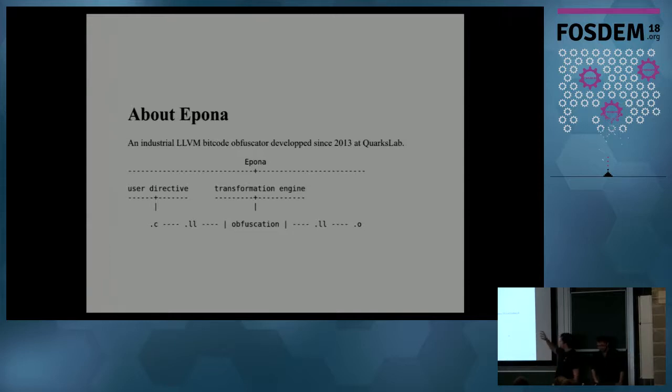So our problem is that in our obfuscator we have the obfuscation from LLVM bytecode to LLVM bytecode and we have this user directory. So the user can control how the compiler behaves so he needs to know what every pass does. Our passes are obfuscation passes, but it's globally the same as any compiler optimization.